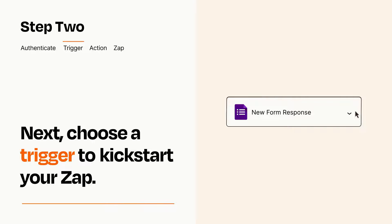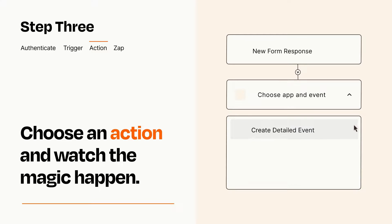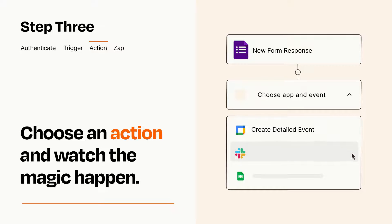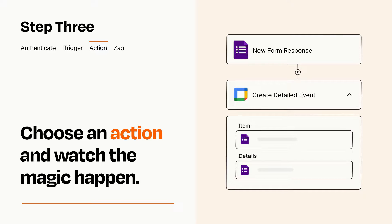This last part is where the magic happens. Choose the action you want to happen in your target app. You'll see a bunch of fields where you can specify the details of your Zap. You can type free form text or pull data in from your trigger step as needed.